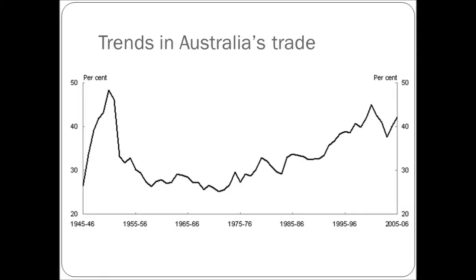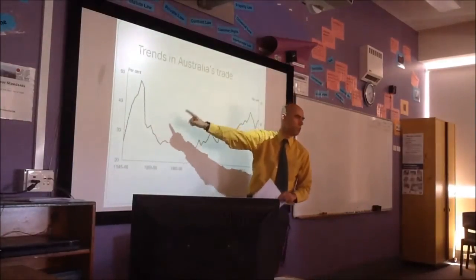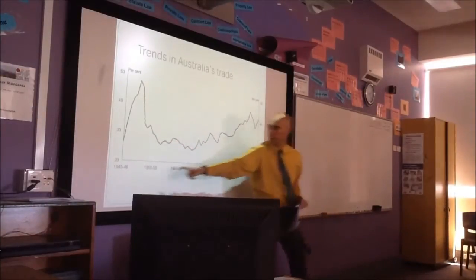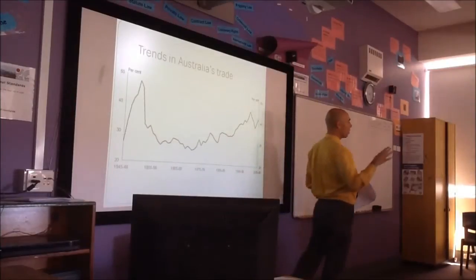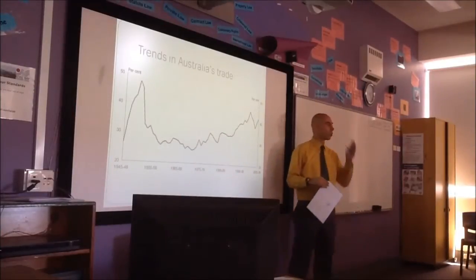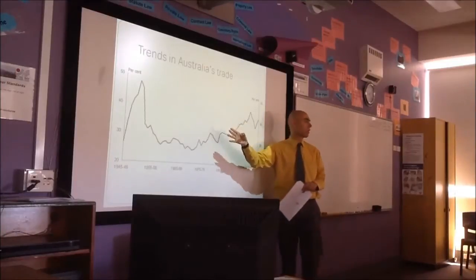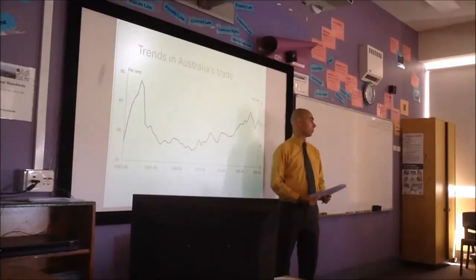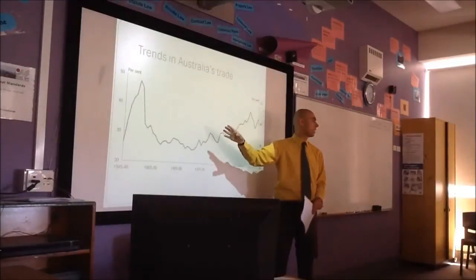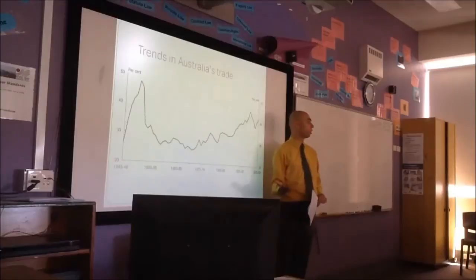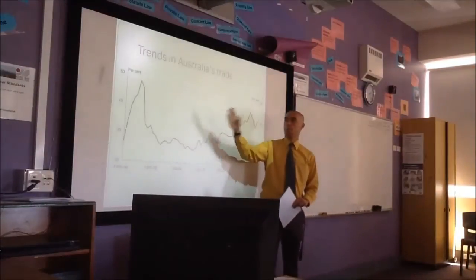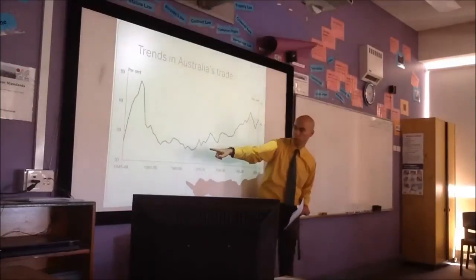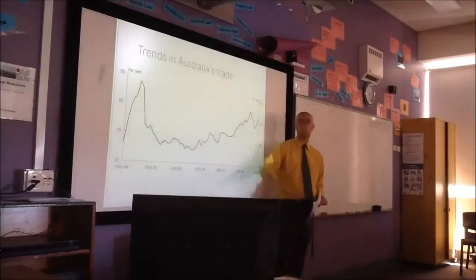Here is the historical trade intensity. There's one big event that happened around here — the Korean War. This is the Korean War boom. There was a war in Korea, creating big demand for clothing and uniforms for soldiers. The price of commodities, particularly wool and cotton, shot up. Australia was the biggest producer of wool in the world, and the price of wool went through the roof, causing a big increase in Australian exports of wool. You can see it shot up from about 25% to almost 50%.